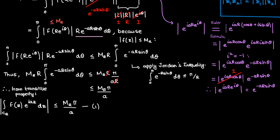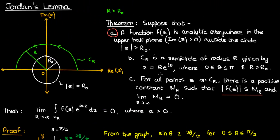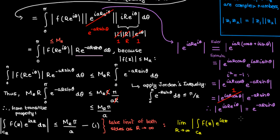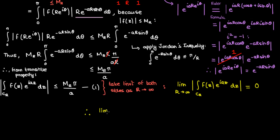With inequality (1) established, we're almost done with the proof. From the original assumptions, the limit of the upper bound M_R as capital R approaches infinity is 0. Taking the limit of inequality (1) as R → ∞, we find that the limit of the magnitude of the contour integral is less than or equal to 0. Since the magnitude of a complex number is never negative, 0 is the only possibility, so this limit equals 0. Since the limit of the magnitude equals 0, the limit of the contour integral itself must be 0 — as the magnitude approaches 0, the complex number approaches the origin. After all this work, we've proven Jordan's lemma.